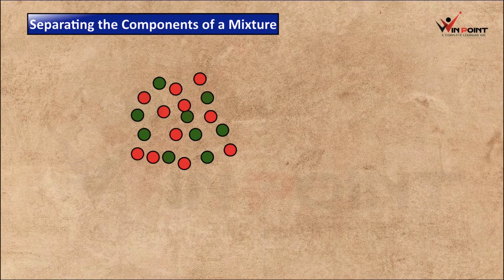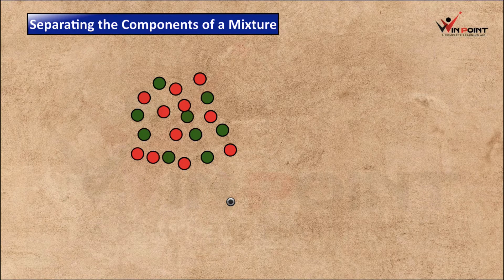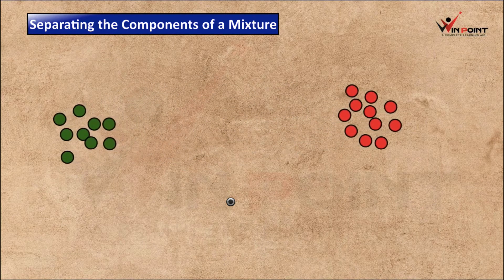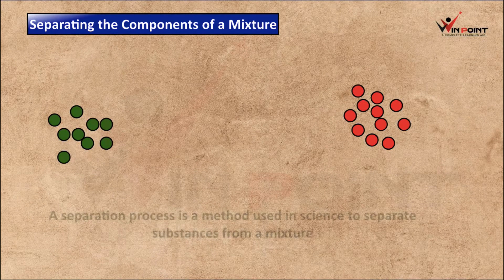In this session we are going to discuss about separation — separating components of a mixture. Here you can see a mixture consisting of red balls and green balls. Using the method of hand picking, we can separate it. When we separate, we get a group of green balls and a group of red balls. This process is known as separation.